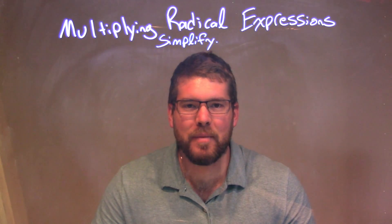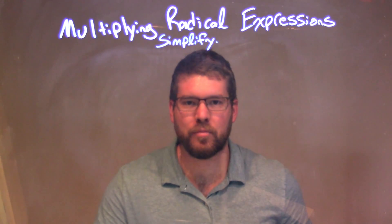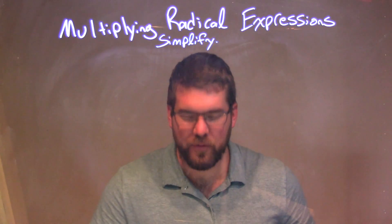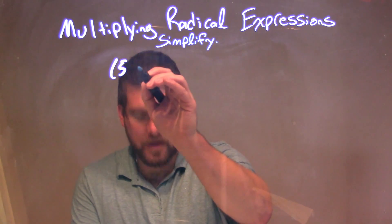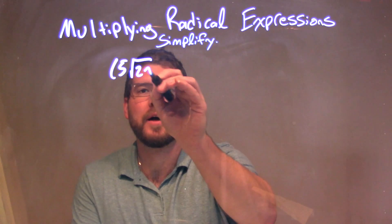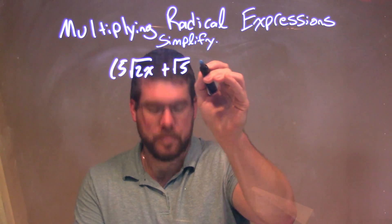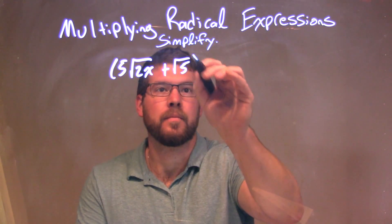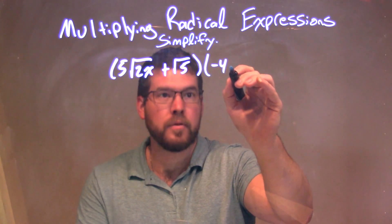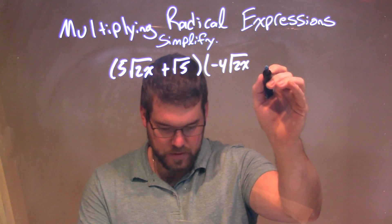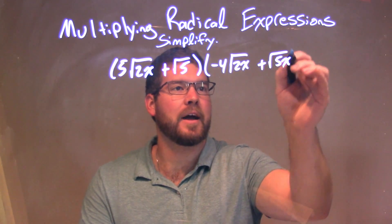Hi, I'm Sean Gannon, and this is MinuteMath. Today we're learning about multiplying radical expressions. So if I was given this expression: 5 times the square root of 2x plus the square root of 5, times minus 4 square root of 2x plus the square root of 5x.